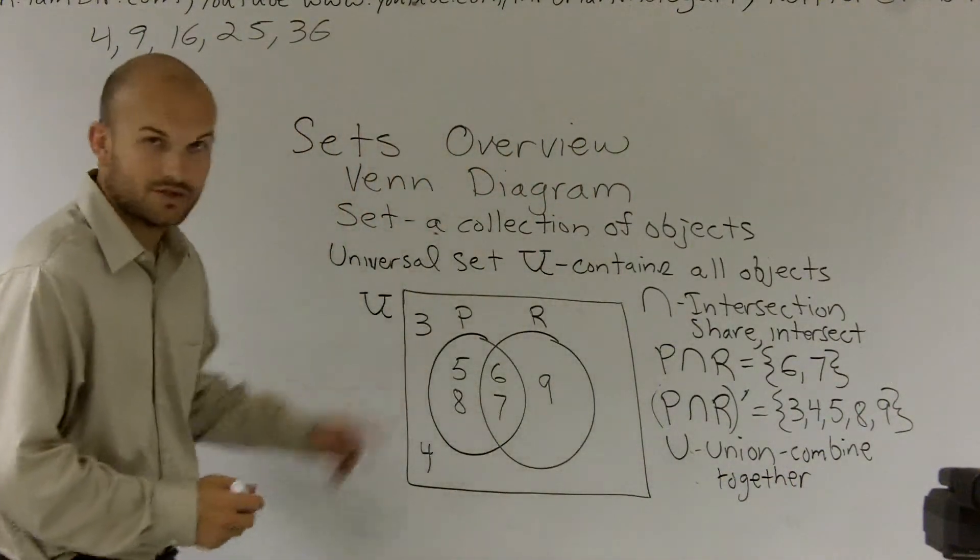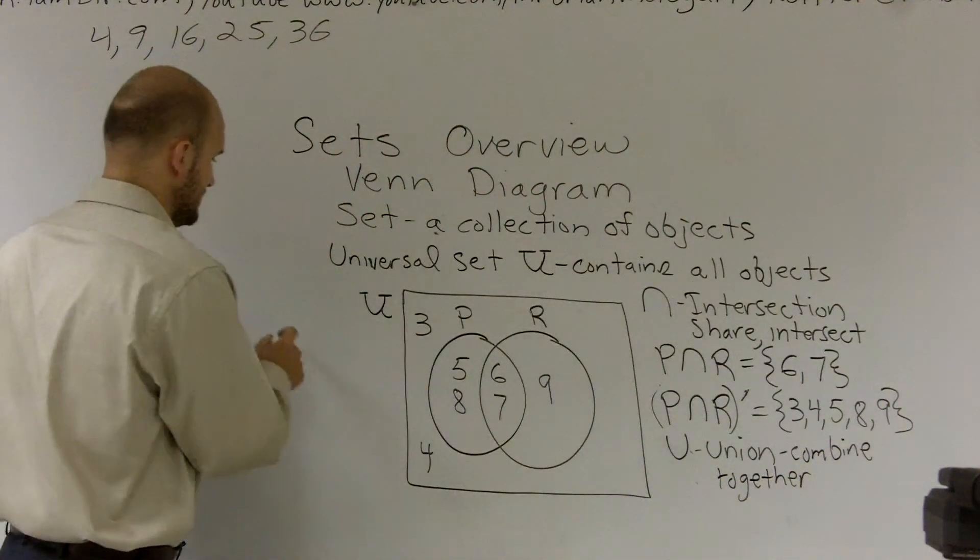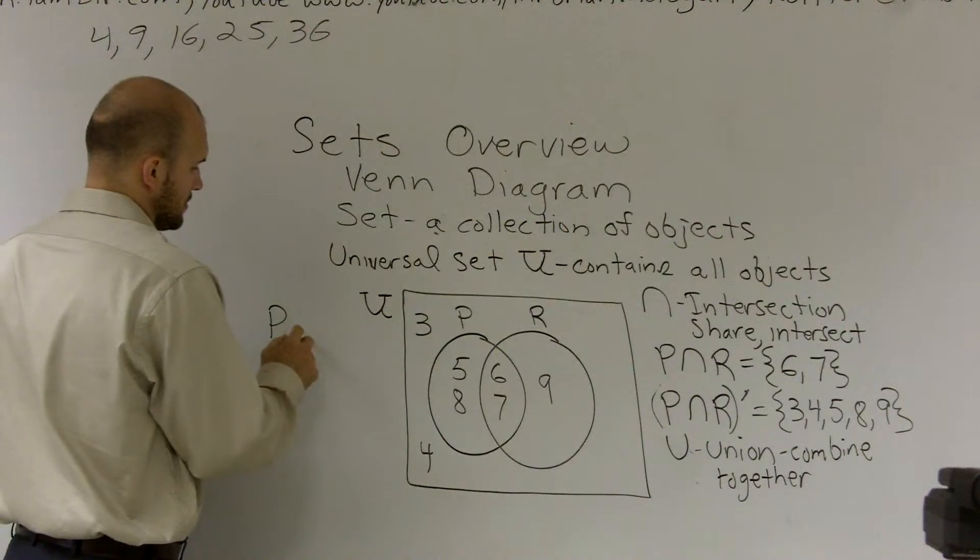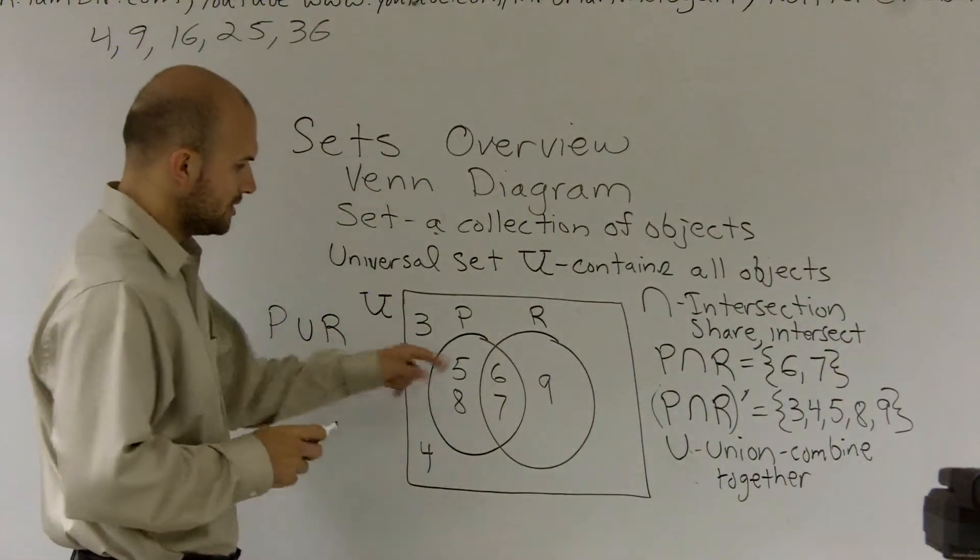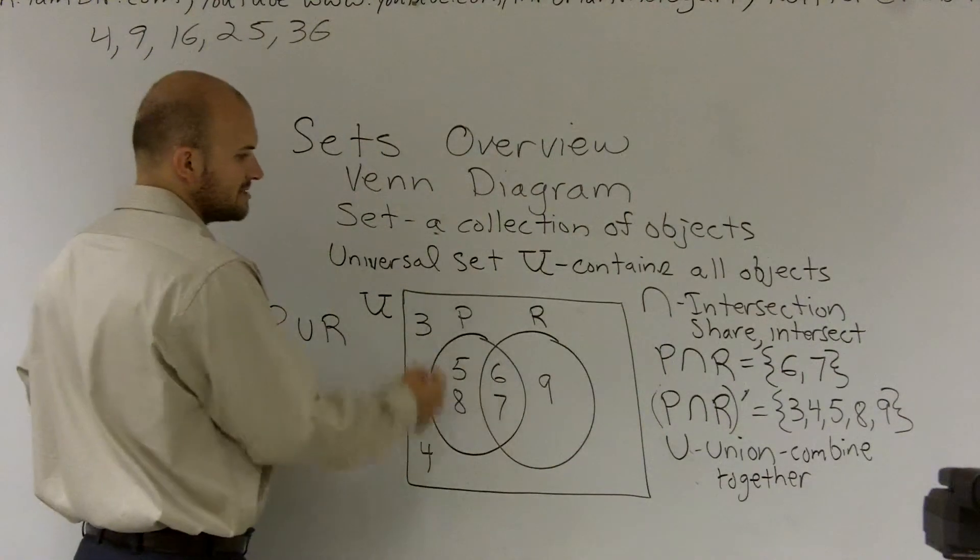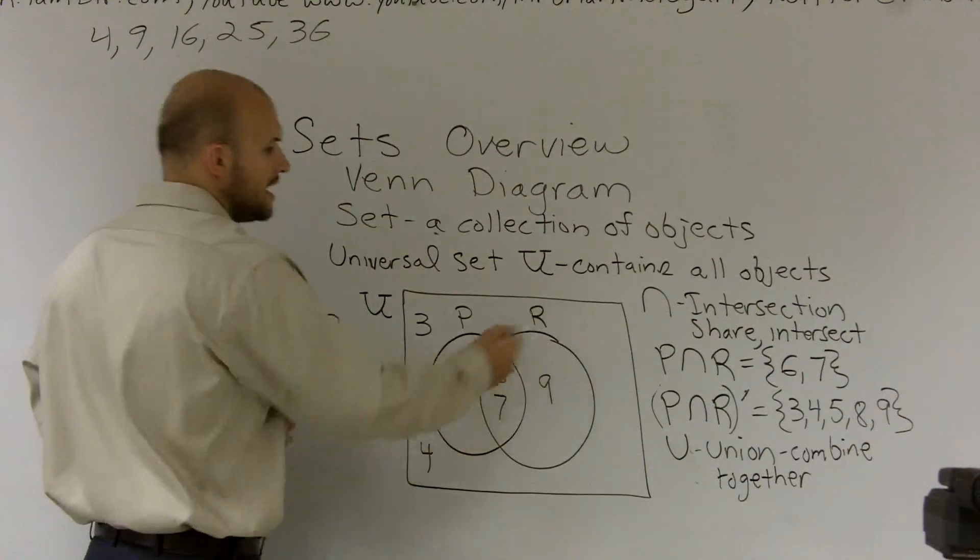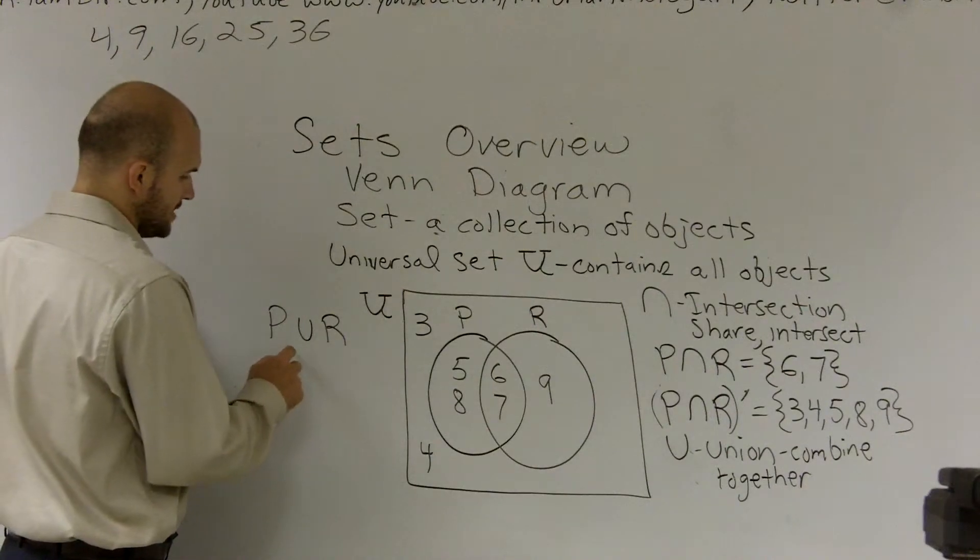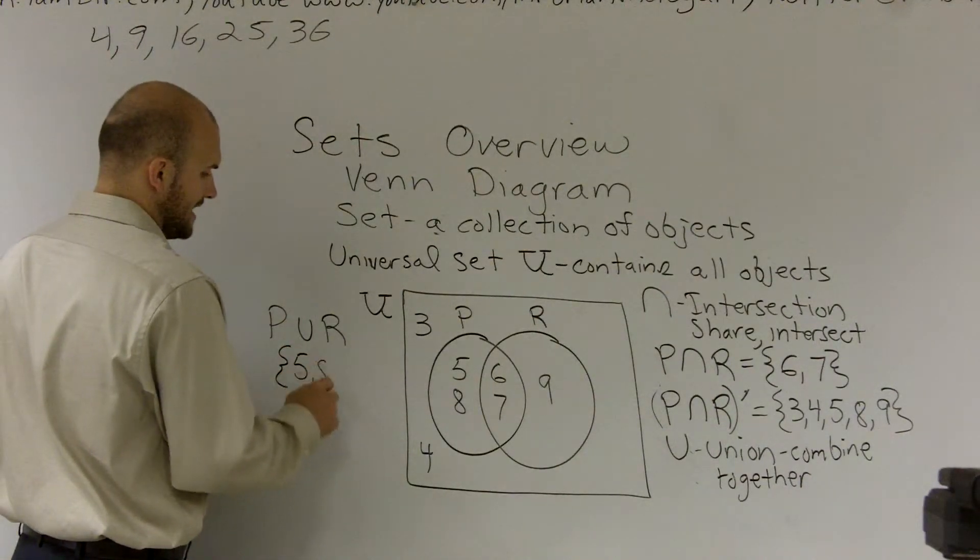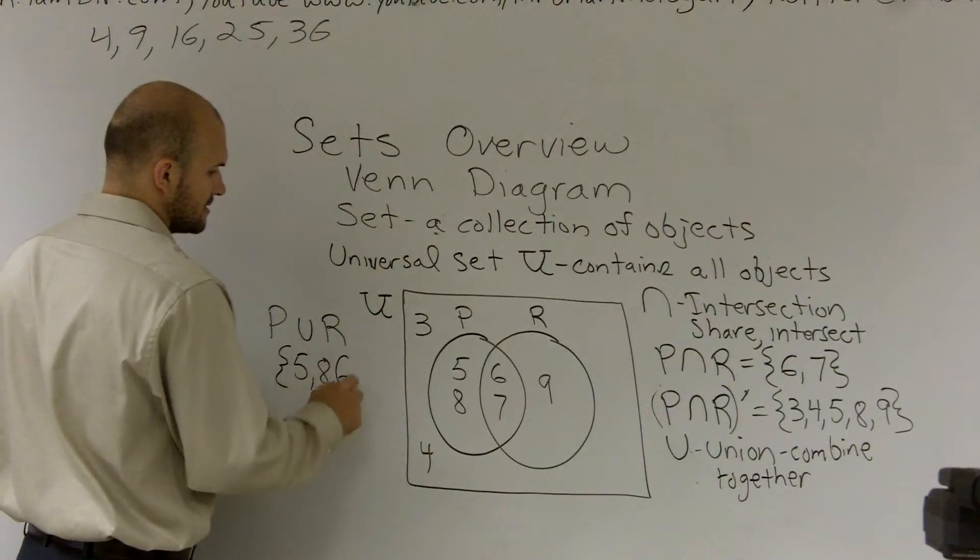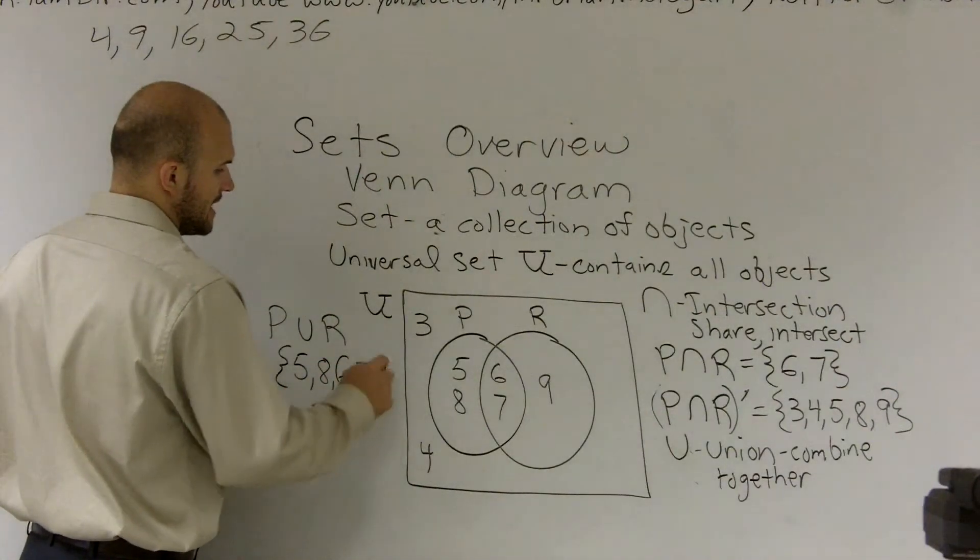All right, so I'm going to actually write over here. If I was going to look for what would be the P union R, when we're looking at P union R, that means everything that's in P plus everything that's going to be in R. So what we end up with is, we're going to have 5, 8, 6, 7, and 9.